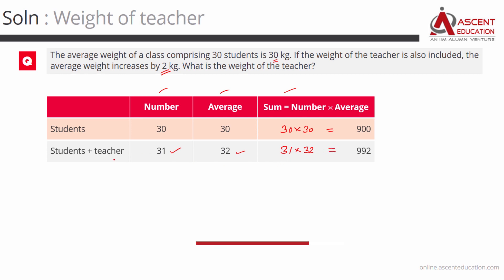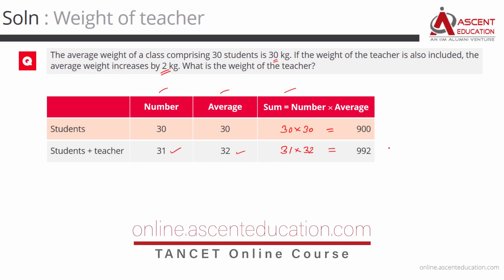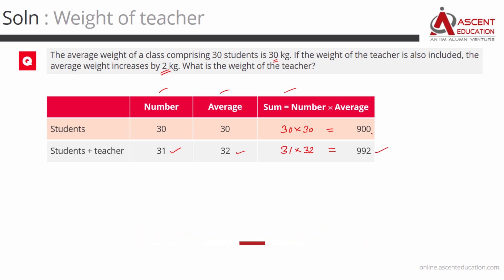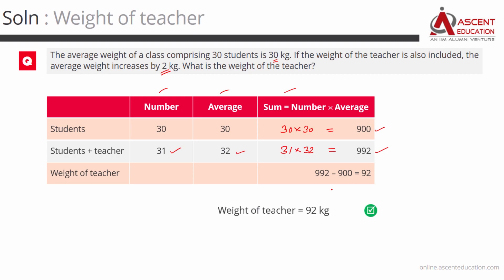Students plus teacher total weight is 992 kgs. Students alone total weight is 900 kgs. So the difference between these two is the weight of the teacher, which is equal to 92 kgs. The weight of the teacher is 92 kgs.